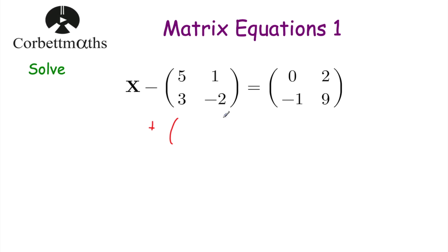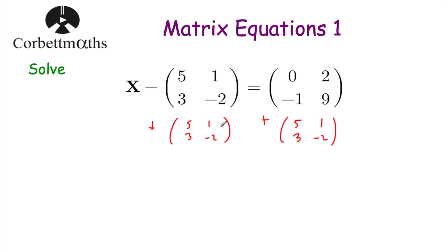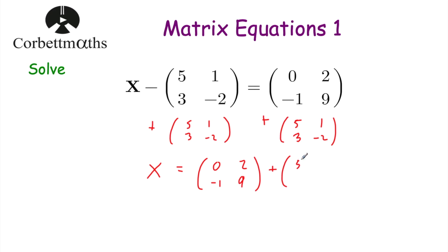So we're going to add it to the left-hand side and we're going to add it to the right-hand side. So we're going to add [5, 1, 3, -2] to the left-hand side and we're also going to add it to the right-hand side of the equation, [5, 1, 3, -2].